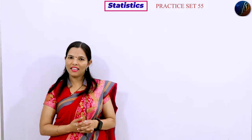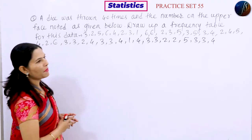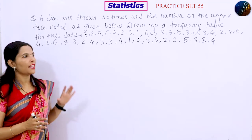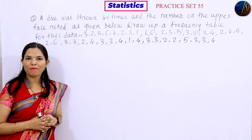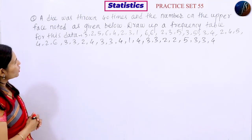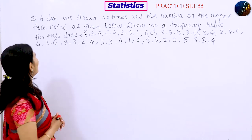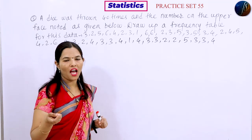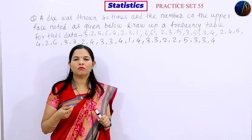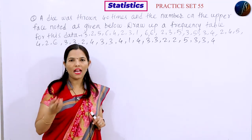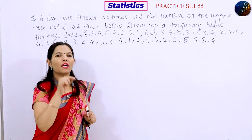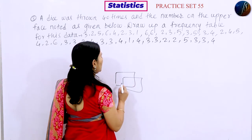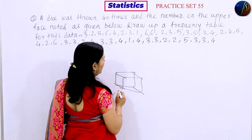Let's start this lecture. Students, this is the third example in your Practice Set 5.5. A dice was thrown 40 times and the number on the upper face was noted as given below. A dice is a cube with six faces.